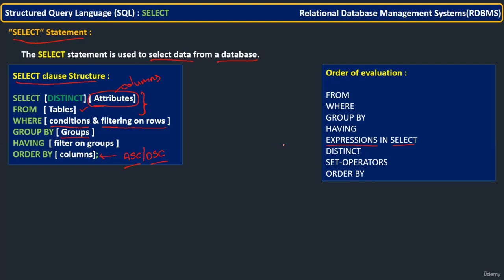This is very, very important. Whenever we are writing any query, we must maintain this order. For better understanding, better efficiency, and better optimization, we must know in which order all these things are going to execute. So this is something about the SELECT clause, and we will deep dive upon SELECT only in the coming lectures.